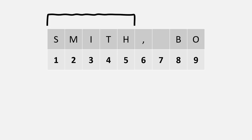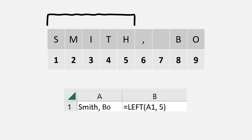So when I try to pull out 'Smith', I'm going to tell Excel I want the first five characters, because that's how many we have in our resulting string. We can use the LEFT function for this. The LEFT function is going to go into cell A1 and grab the first five characters.